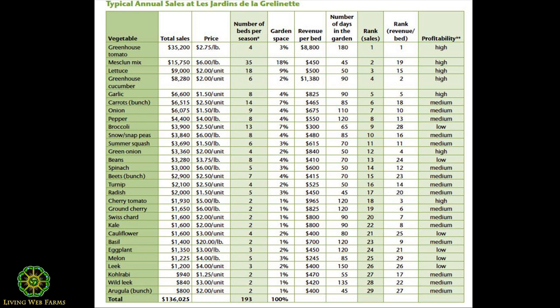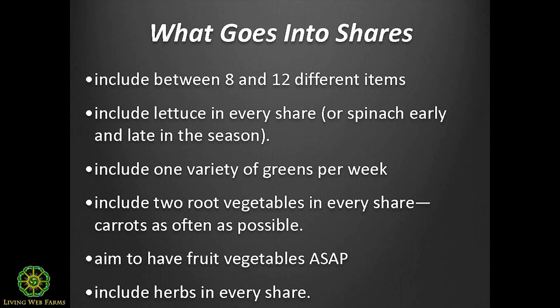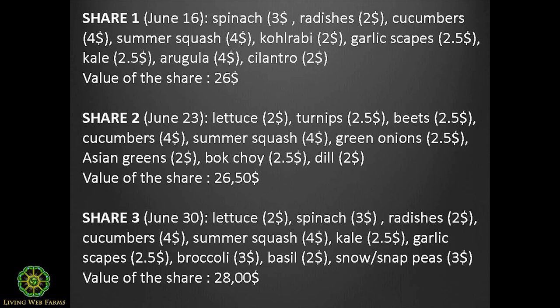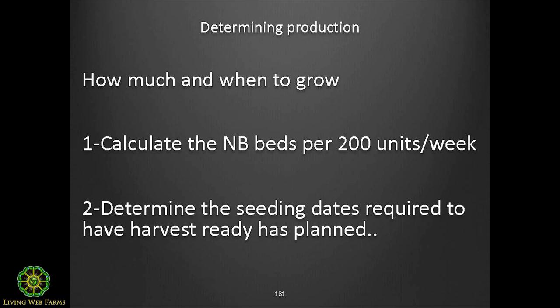Once we knew that, we assembled the basket for 22 weeks. We predetermined in the winter how each weekly share is going to be filled. Share one — our target is June 16th, first delivery — we decided there will be spinach, radishes, cucumber, summer squash, kohlrabi, and so on. We put the price on everything and came to a total of $26 for the first share. Share number two a week later, different produce, and so on for all 22 shares. That's how we determine what we're going to grow.